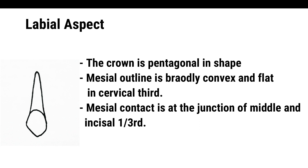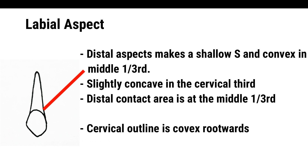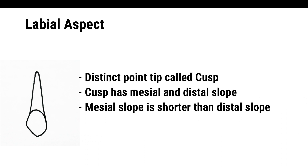Labial Aspect – Crown: The crown is roughly pentagonal in shape. The mesial outline may be convex or slightly concave from the cervix to the contact area, which is located at the junction of the middle and incisal one-third. The distal outline is concave from the cervix to the contact area at the middle one-third. The cervical outline is convex rootwards.